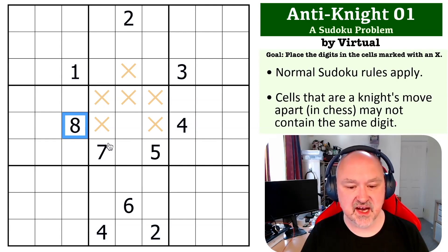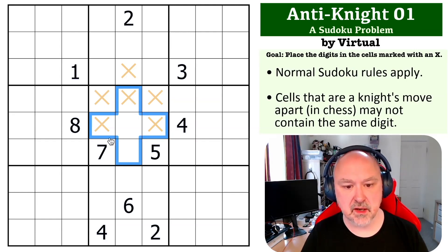If we look at this eight, it sees all of those cells in the row, and it sees those two cells by knight's move. So the eight is forced into one of those two cells.